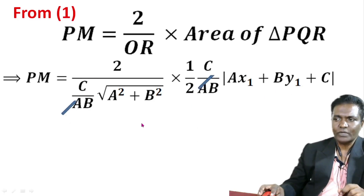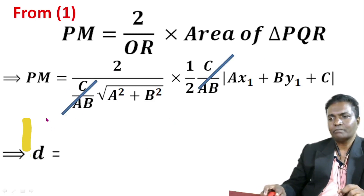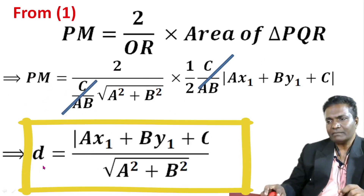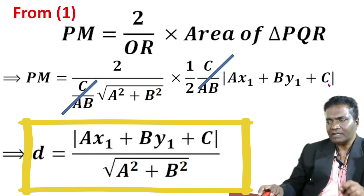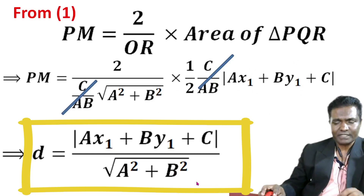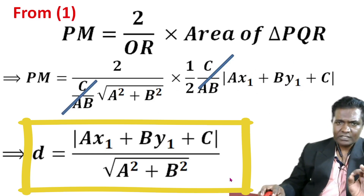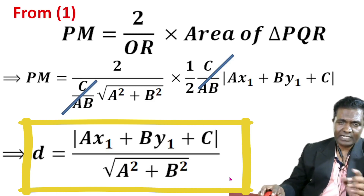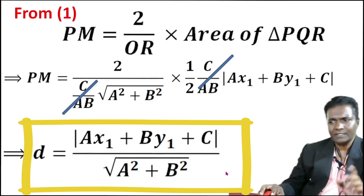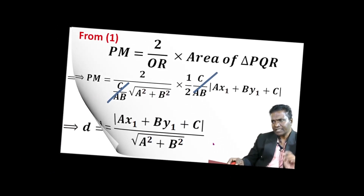Substituting back into equation 1, PM equals 2 times (C by AB times mod of ax1 plus by1 plus c) divided by QR, simplifying to mod of ax1 plus by1 plus c divided by root of a squared plus b squared. This is the formula for the length of the perpendicular from point P(x1, y1) to the line.